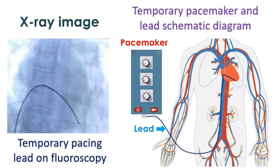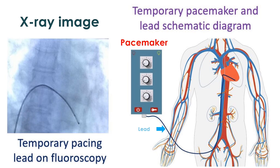It is placed outside the body and connected to the heart with electrical leads introduced through the veins of the neck or groin through a small hole in the skin. The diagram shows the temporary pacemaker lead reaching the right ventricle, the right lower chamber.